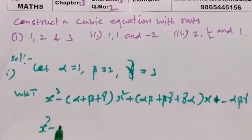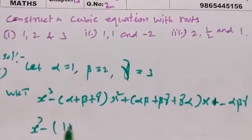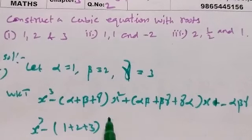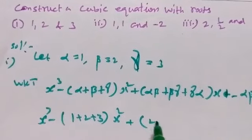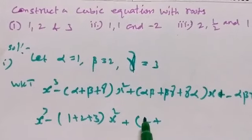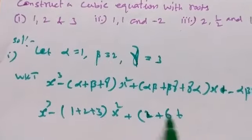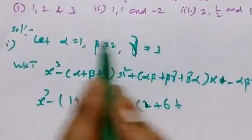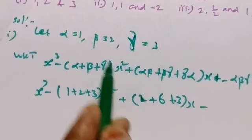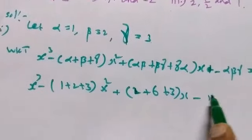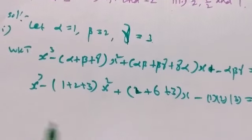So x³ minus (alpha + beta + gamma), that is 1 + 2 + 3, into x² plus (alpha·beta = 1×2, beta·gamma = 2×3 = 6, gamma·alpha = 3) into x minus alpha·beta·gamma = 1×2×3 equal to 0.